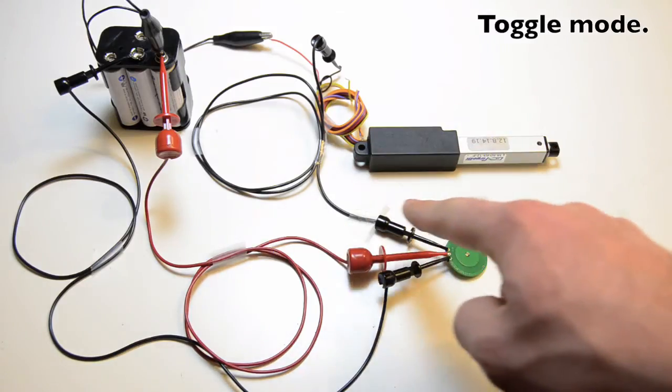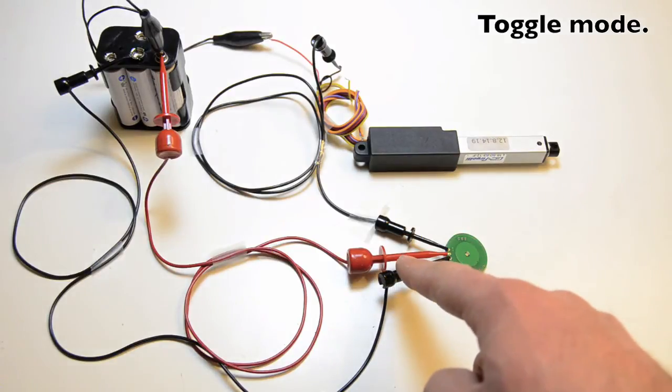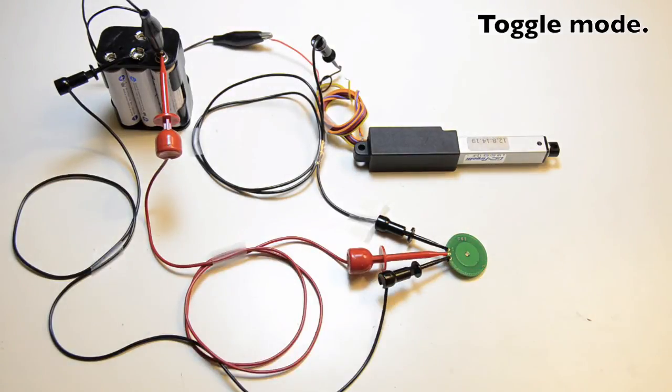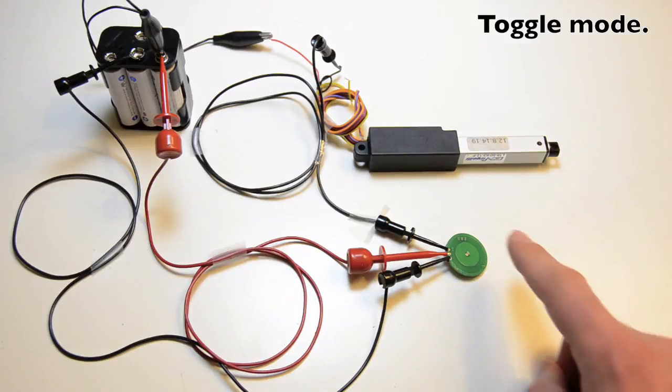So now we're using the toggle version of the switch. We're using the same setup as before but now we're using a linear actuator instead of a motor.